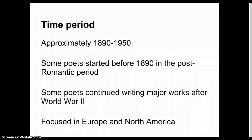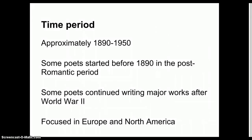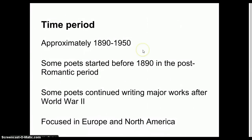The time period for modernist literature is approximately 1890 to 1950. This is a very important time because 1890 we're ending the 1800s, the turn of the century. We have the invention of the automobile, World War I, World War II, the depression. And some people think all of these wars and all of these innovations happening so quickly led to a huge change in literature.